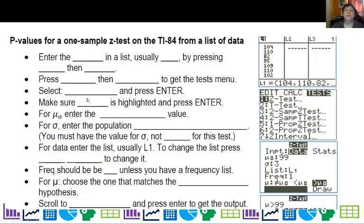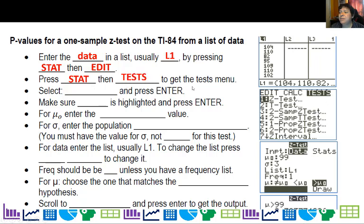Now, how to do this on your calculator. The nice thing is your calculator will do most of the work for you. First, if you're doing data, enter the data in a list — usually list 1 — by pressing STAT then EDIT. Then press STAT and scroll over to TESTS to get to the test menu. Select the first one. In this unit, we're only going over three tests: number 1 (z-test), number 2 (t-test), and number 5 (one-prop z-test). Make sure that once you pick 1-z-test, data is highlighted and press ENTER.